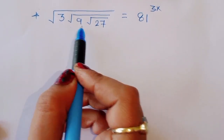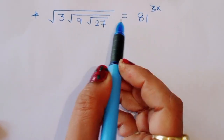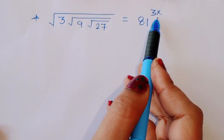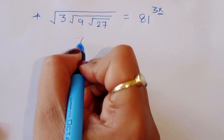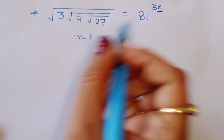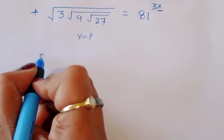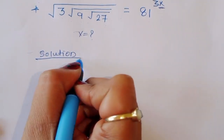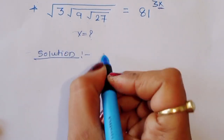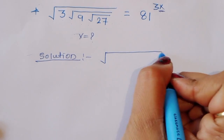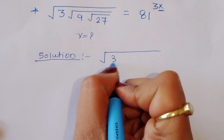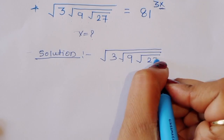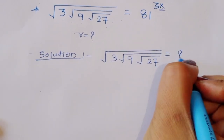Square root of 3 times square root of 9 times square root of 27 is equal to 81 raised to 3x. We have to find out the value of x. Let's see the solution. First, what is given: square root of 3 times square root of 9 times square root of 27 is equal to 81 raised to 3x.